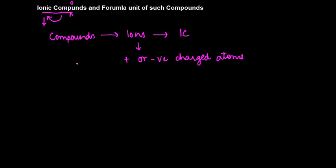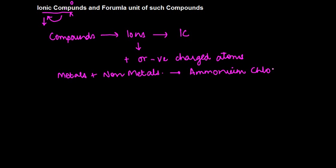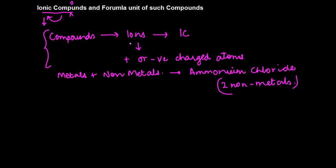Ionic compounds are mostly formed through a combination of metals plus nonmetals. There is one exception to this, which is ammonium chloride, in which case it is formed only from two nonmetals. But otherwise, normally ionic compounds are formed from a metal and a nonmetal.